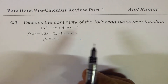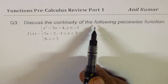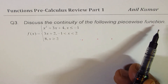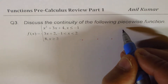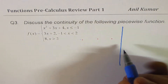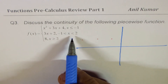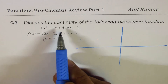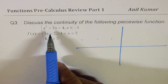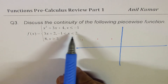Question 3: discuss the continuity of the following piecewise function. Piecewise functions have different kinds of graphs over different intervals. In this particular case, three pieces are joined together.